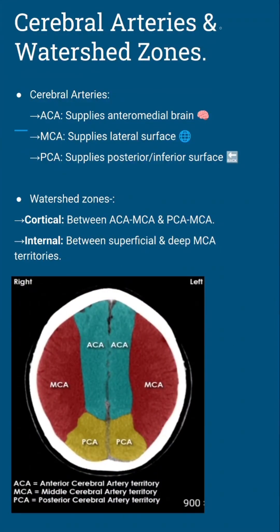Let's map the brain. The anterior cerebral artery, or ACA, feeds the anteromedial part — think frontal lobe action. The middle cerebral artery, MCA, covers the lateral surface, which is key for motor and speech areas. And the posterior cerebral artery, or PCA, handles the posterior and inferior zones like your visual cortex.